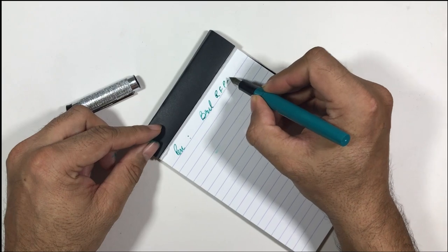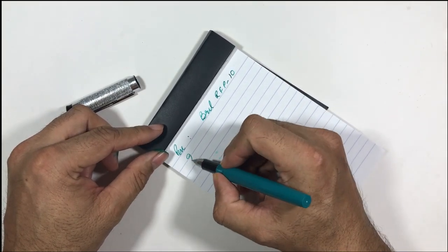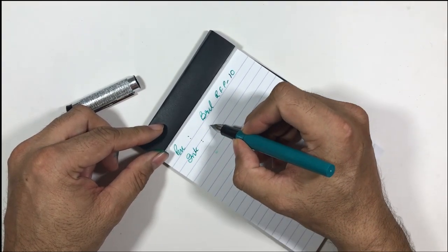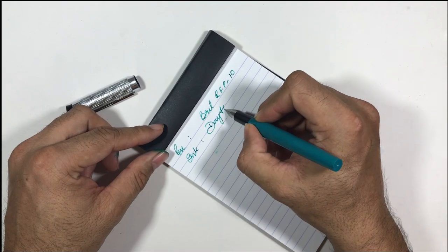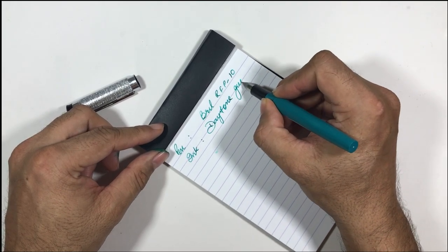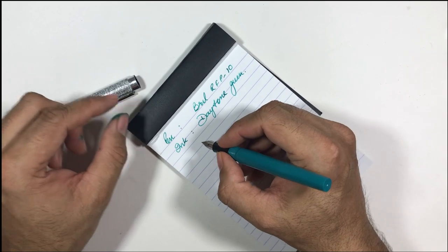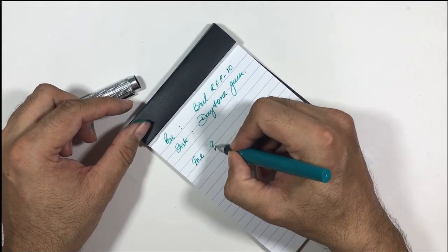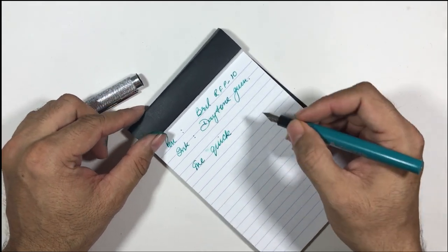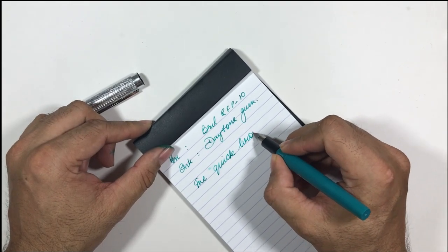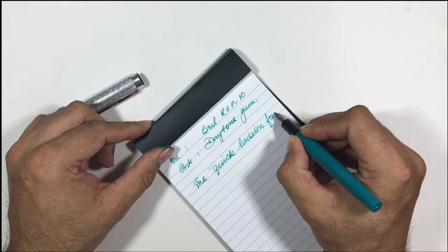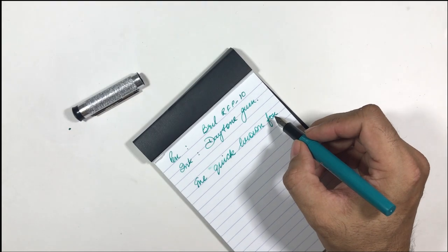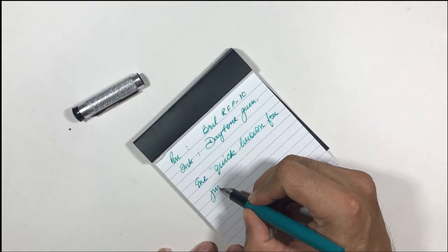Pen is Brill RFP 01 inked with Daytone green. Let's write something: quick brown fox jumps over the lazy dog.